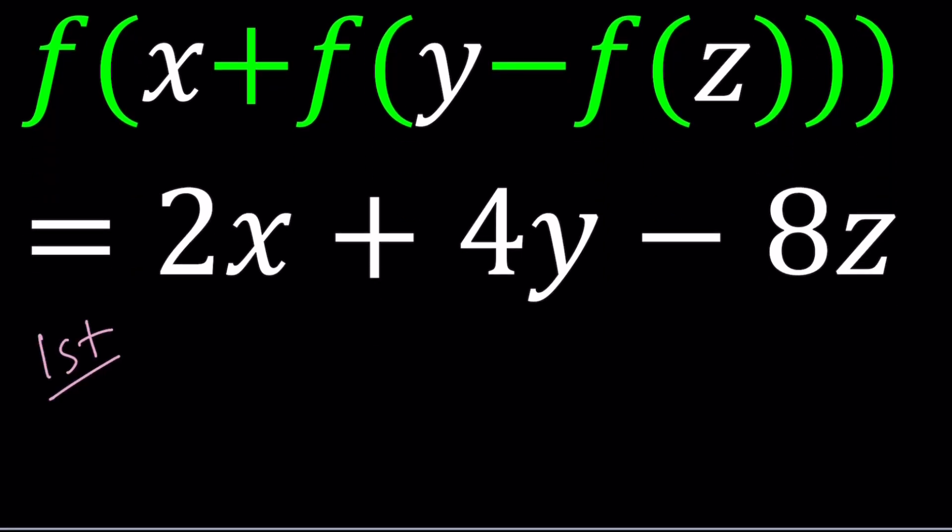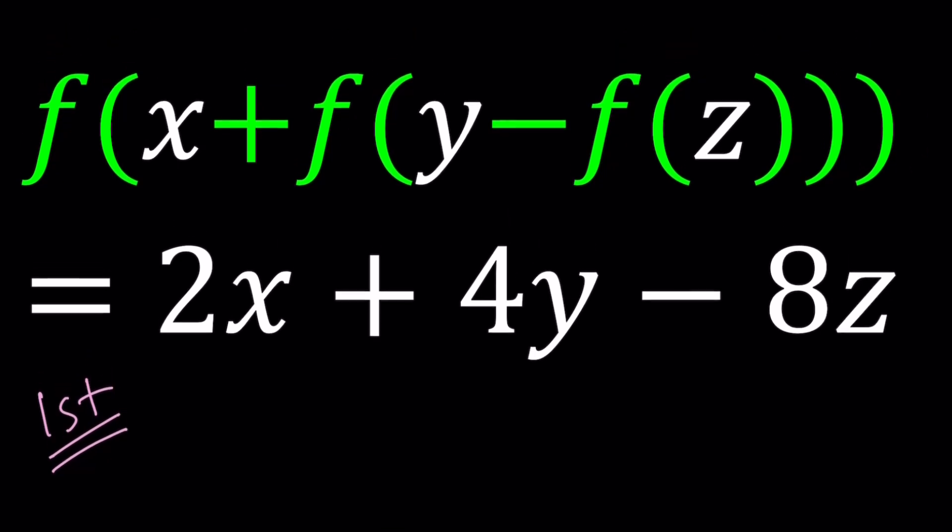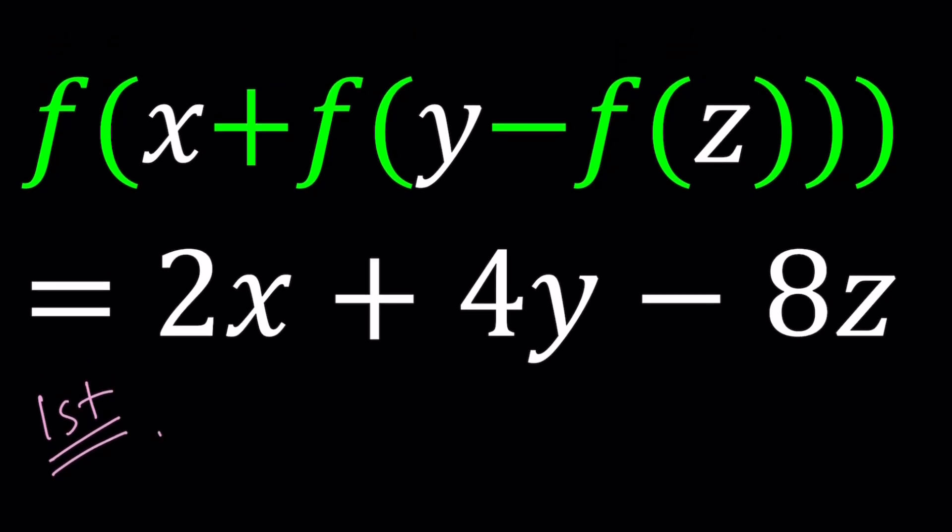So for my first method, I'm going to replace y and z with 0 at the same time. So y equals 0, z equals 0. As with functional equations, a lot of times we have a lot of freedom unless given otherwise. We can replace x, y, z with pretty much anything. Sometimes we replace y with z, z with y, x with y, y with x, whatever. But pretty much you have that type of freedom.